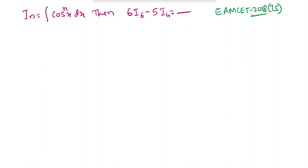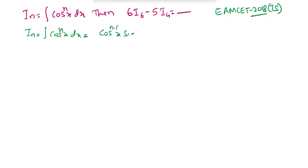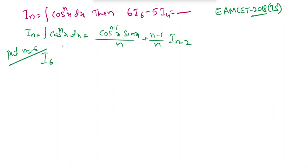MSet 2018 problem: if Iₙ = integration of cosⁿx dx, find 6I₆ minus 5I₄. Using the reduction formula: Iₙ = (cos^(n-1)x · sinx)/n plus (n-1)/n · Iₙ₋₂. Substituting n = 6: I₆ = (cos⁵x · sinx)/6 plus (5/6)·I₄.